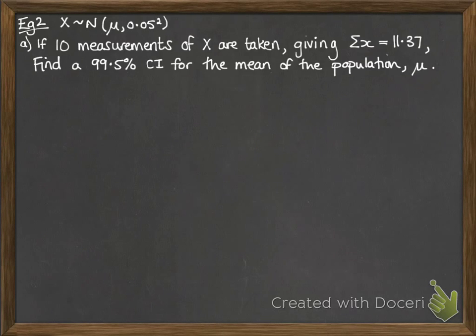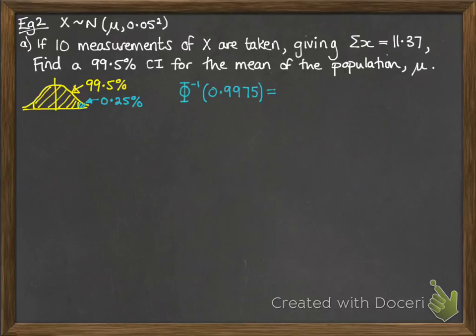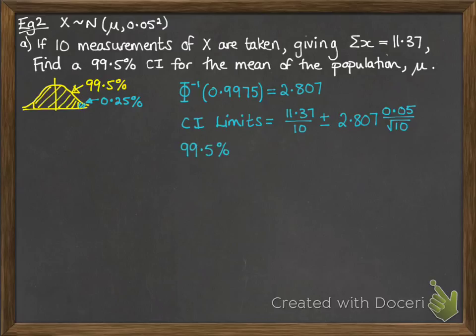Next example. X follows this normal distribution. Ten measurements of x are taken and we get the sum of x is 11.37. Find a 99.5% confidence interval for the mean μ. With 99.5%, that means our little bit there is 0.25%. So we're looking for the inverse φ of 0.9975. That gives us 2.807 as our z value. The confidence interval limit: we need to do 11.37 over 10 to get the sample mean, then plus or minus 2.807 and then σ over root 10. So it looks like this.